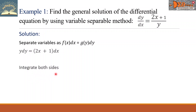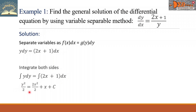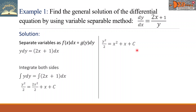Next, we integrate both sides. So we have the integral of y dy equals the integral of (2x plus 1) dx. The result on the left side is y squared over 2, and the right side gives 2x squared over 2 plus x. Then we add plus c. We can cancel the constant 2 and the denominator 2, rewriting the equation as y squared over 2 equals x squared plus x plus c. We can simplify further by multiplying through by 2, giving y squared equals 2x squared plus 2x plus c.